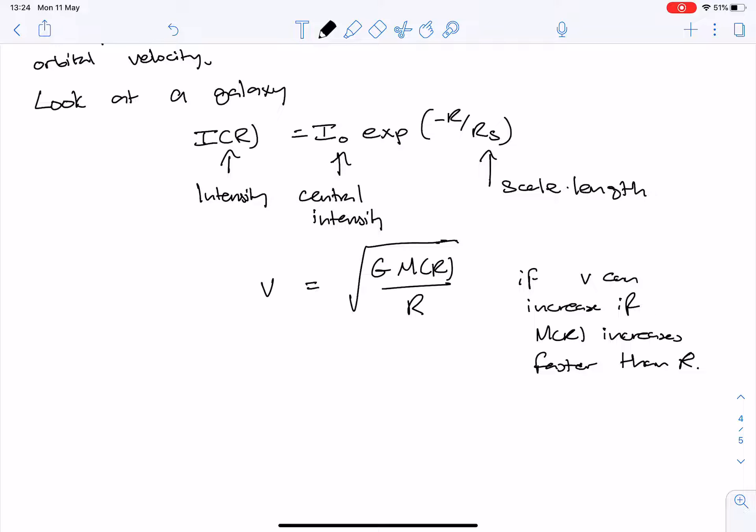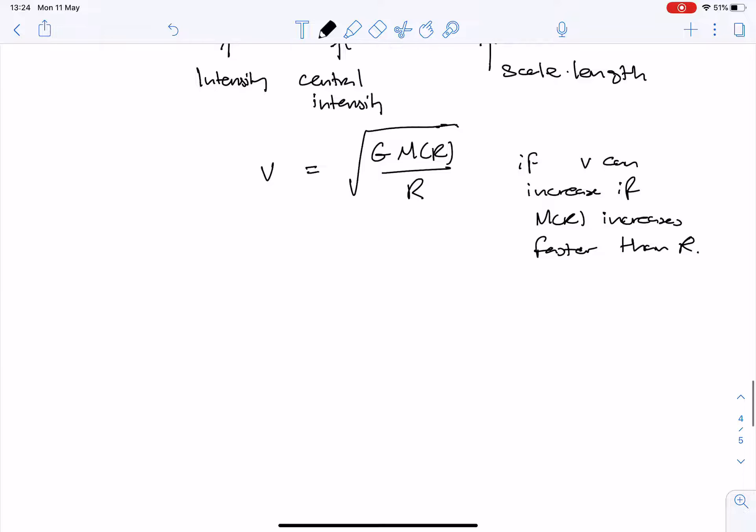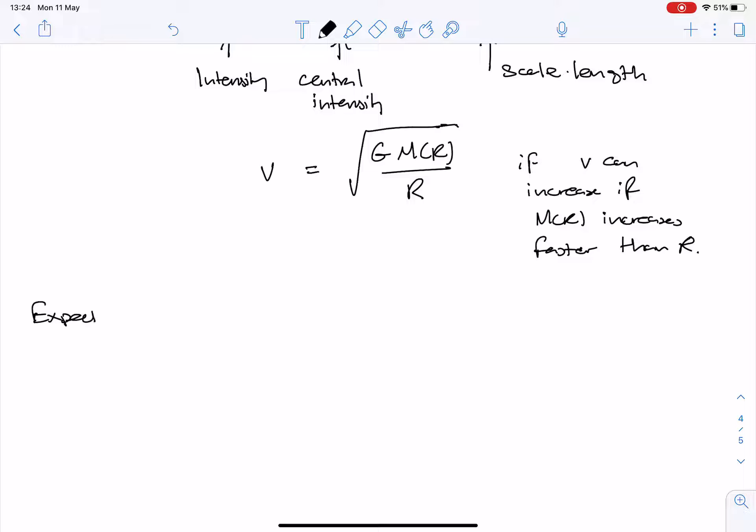And so what I expect to see in a galaxy is I expect to see a rising rotation curve, i.e. velocities increase with distance. And then eventually, of course, I run out of galaxy, and then it behaves just like a point source inside it, and it turns over beyond the visible galaxy. So what I expect to see, I get the r to the minus a half law.